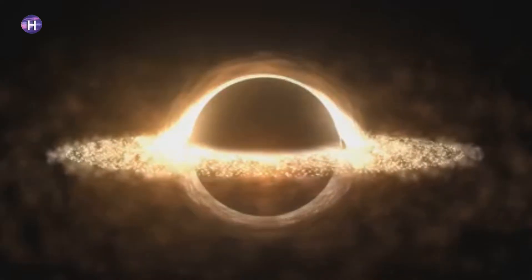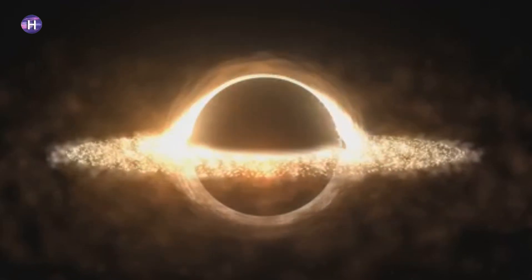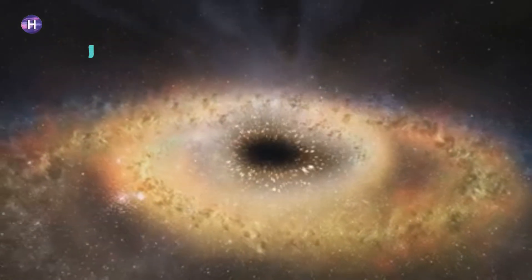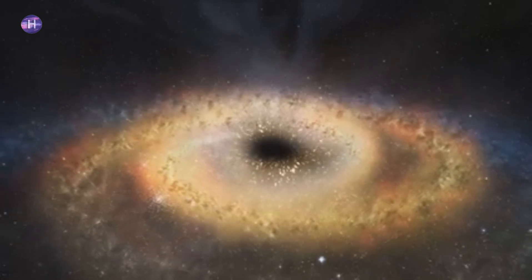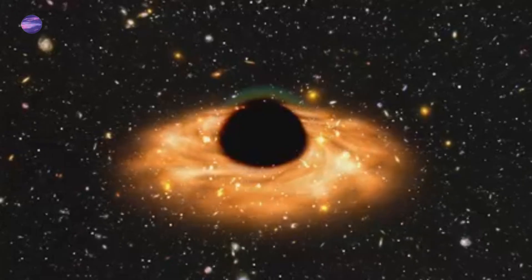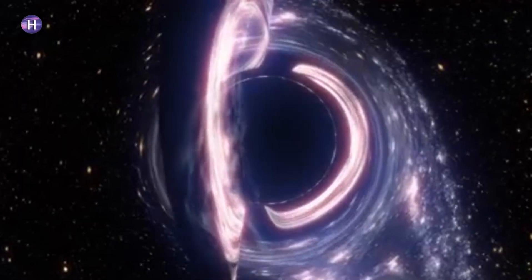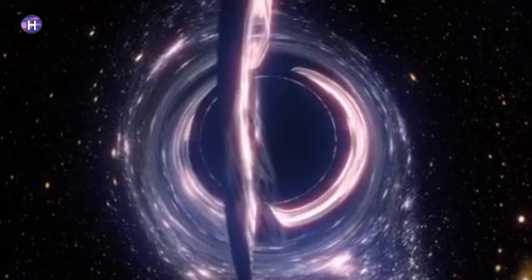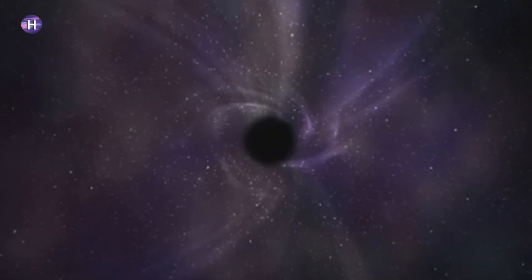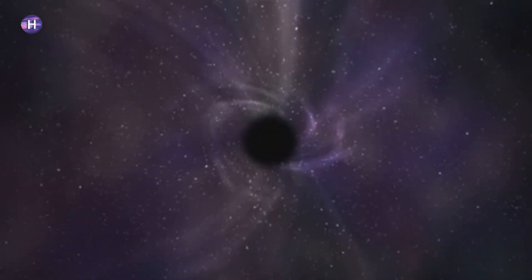JWST has given us our closest look yet at a black hole's event horizon. It observed a supermassive black hole at the center of a galaxy far, far away. This black hole is millions or even billions of times the mass of our sun. JWST observed matter swirling around the black hole at incredible speeds. This matter is heated to extreme temperatures and gives off light that JWST can detect.